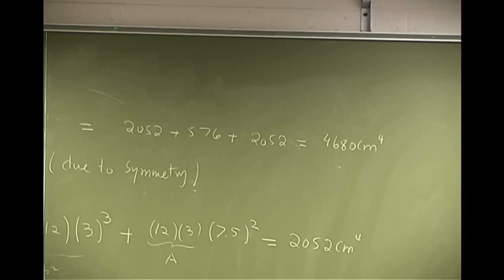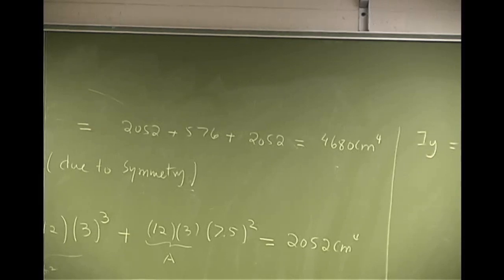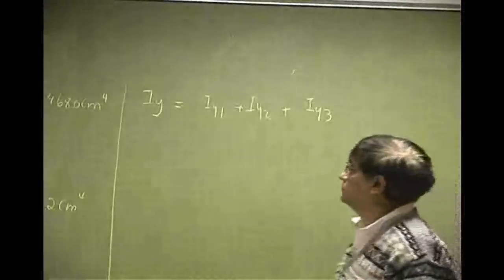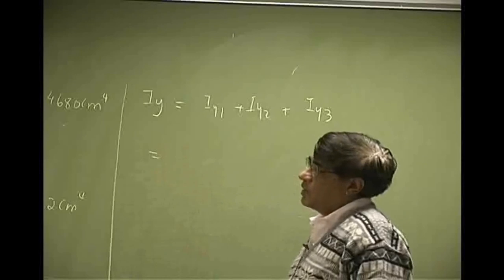That is half of the solution. Now we need to do the same thing with Iy. So Iy is going to be Iy1 plus Iy2 plus Iy3.